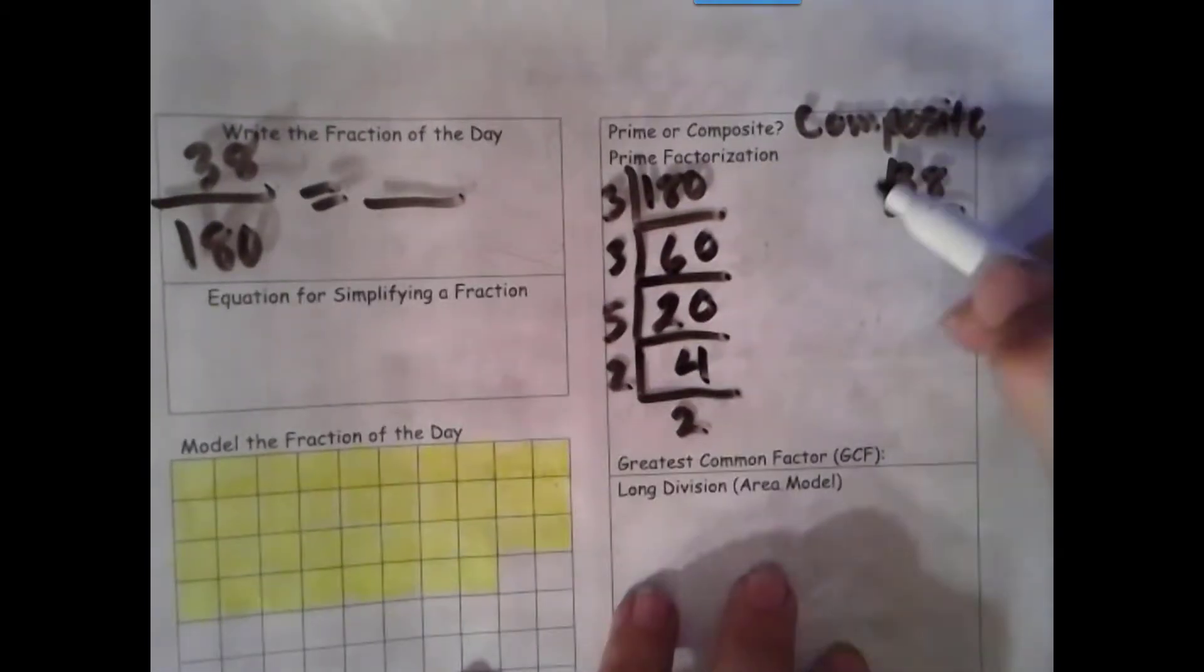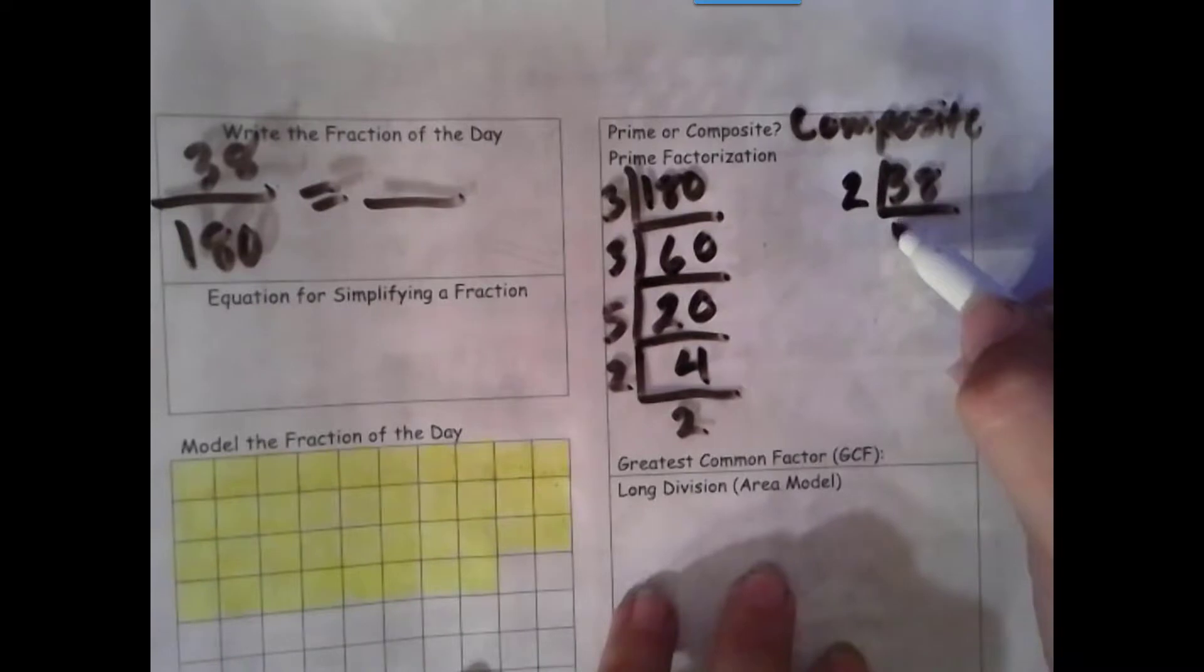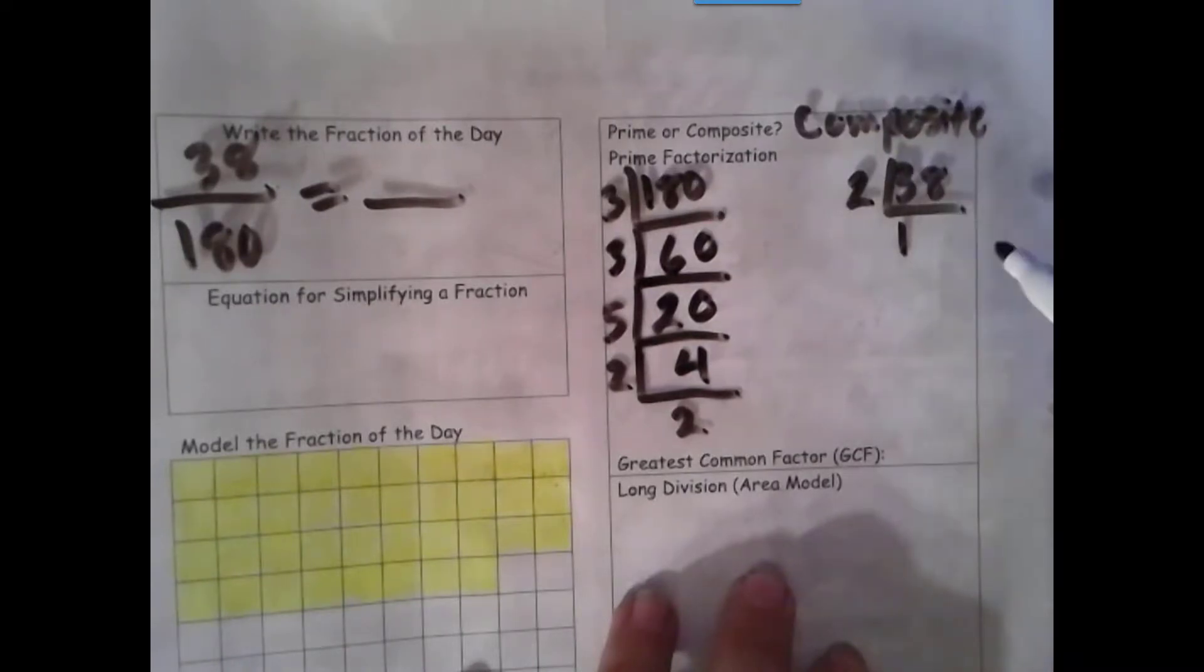Okay, 38. That's even, so I can divide by 2. Half of 3 I can't do, but half of 2 tens is 1 ten. Then I'm left with 18. Half of 18 is 19.